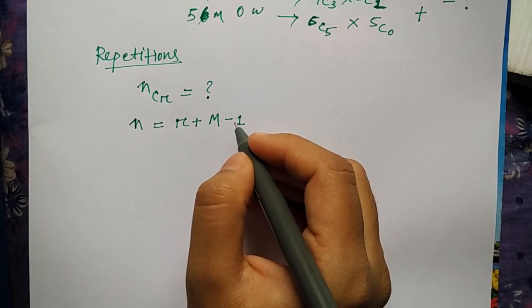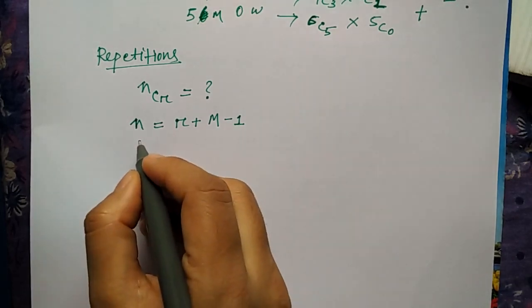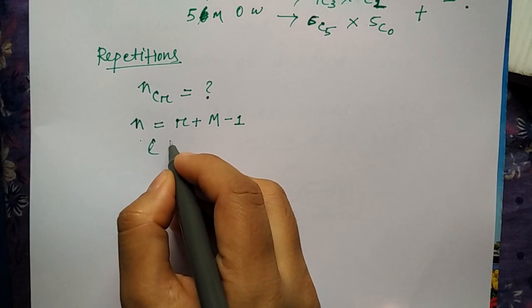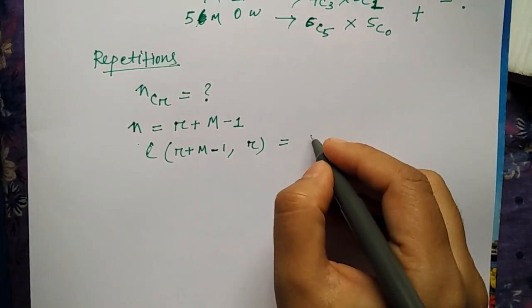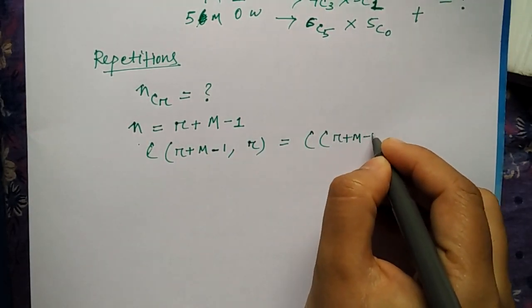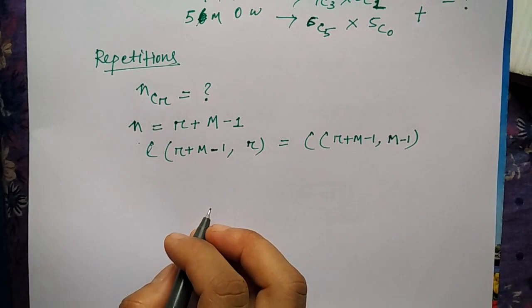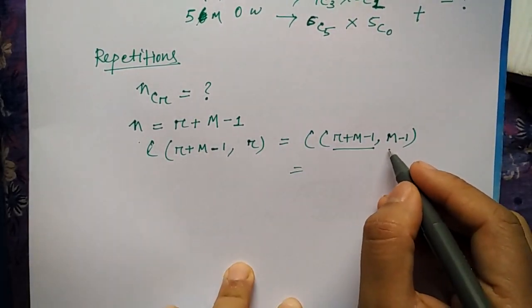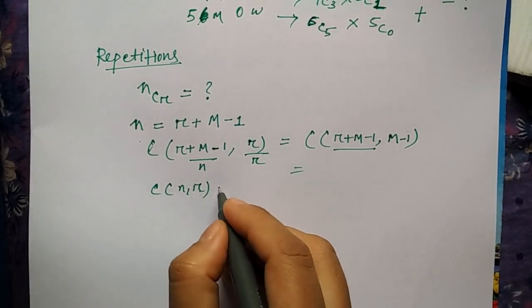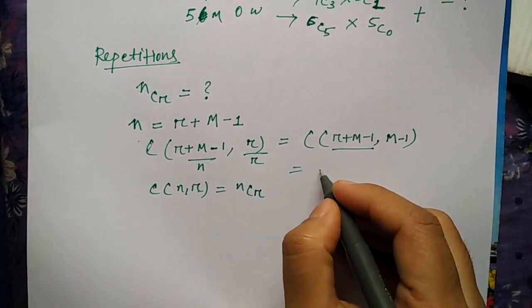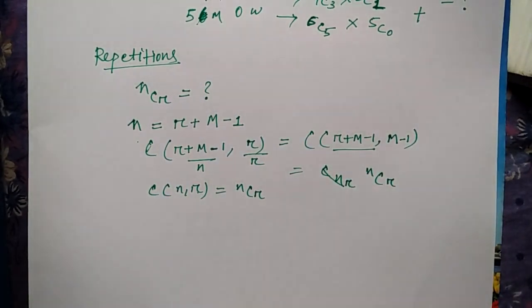Now what is m? M is the value which you will be getting from the question, and r will be the same r. So you can write it as C(m, r+m-1) or C(r+m-1, r), and the same thing or you can take it as C(r+m-1, m-1). In these two ways you can take it, and after that whatever value you will be getting, using this value you can find out nCr.